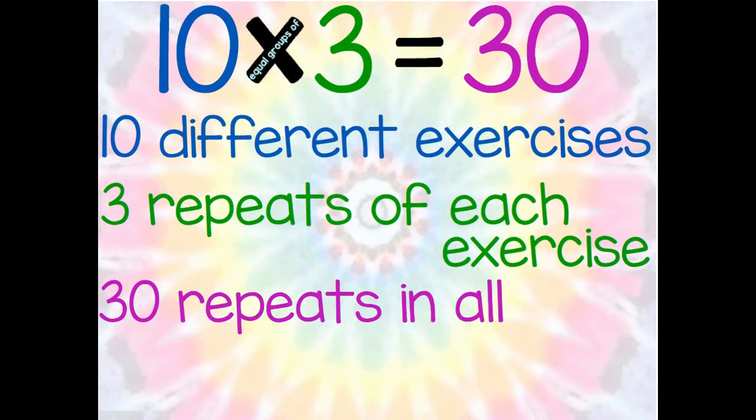Alright, follow along. 10 times 3 equals 30. We will do 10 different exercises, 3 repeats of each exercise which will equal 30 repeats in all.